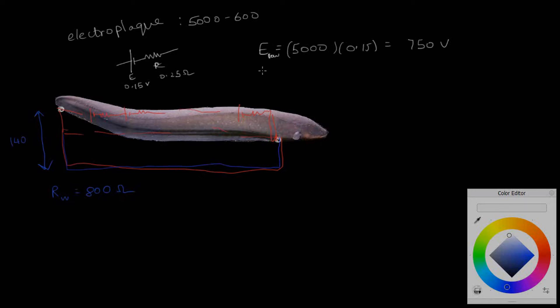I'll call that E_row. Now let's find out R_row, the resistance afforded by this entire row. That would be 5,000 times 0.25, and that's 1,250 ohms—quite a considerable resistance.